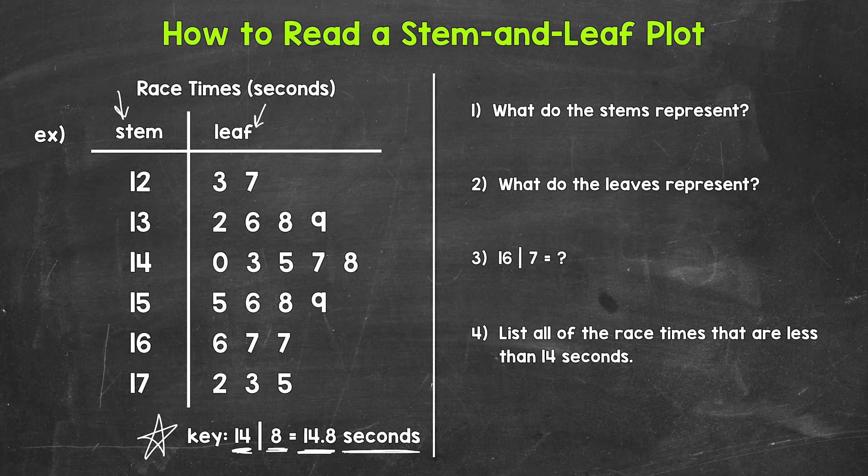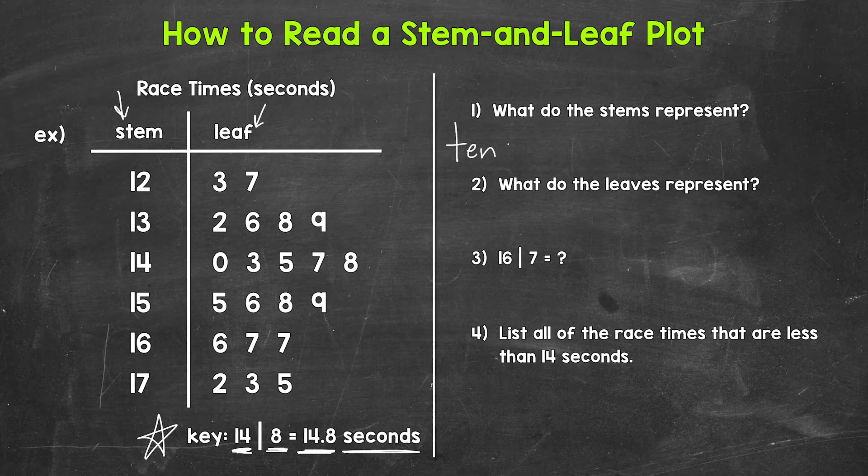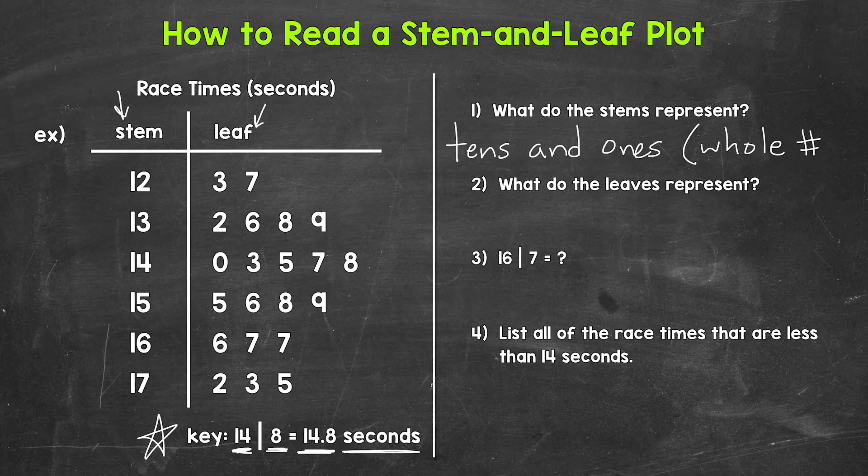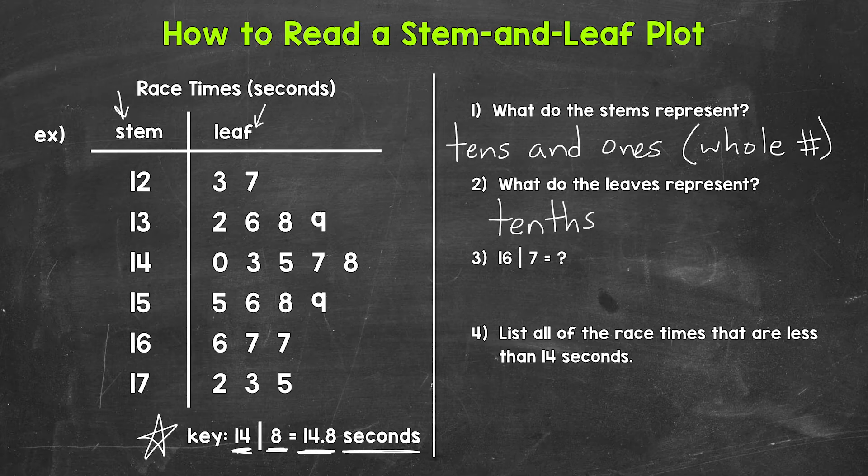So looking at numbers one and two, what do the stems represent and what do the leaves represent? The stems represent the tens place, the tens digit, and the ones place, the ones digit. Or we can think of this as the whole number. And then the leaves represent the tenths place, the tenths digit.